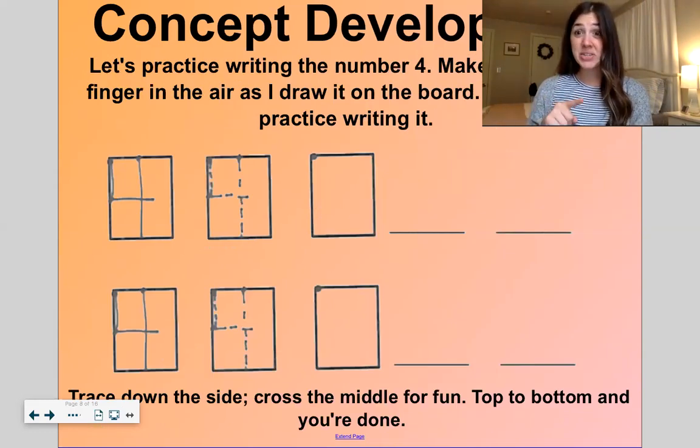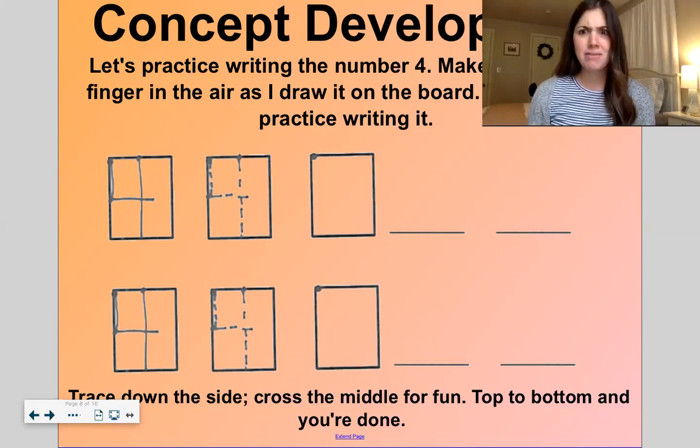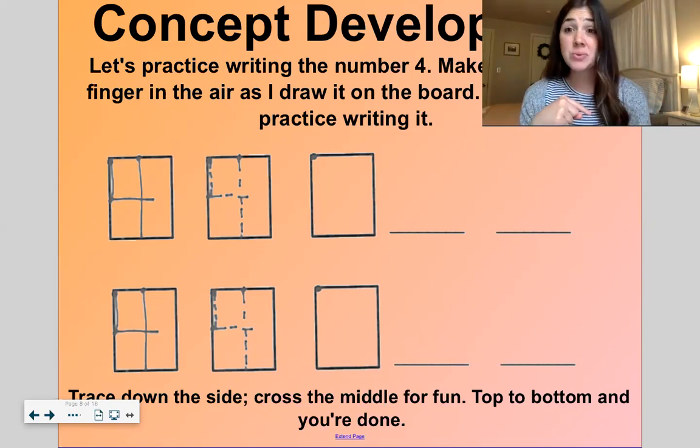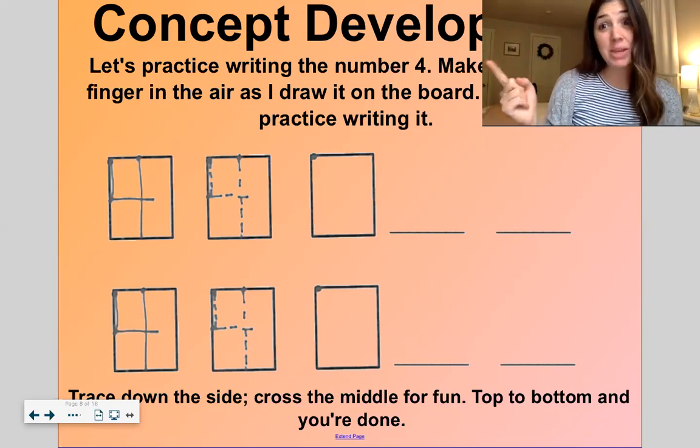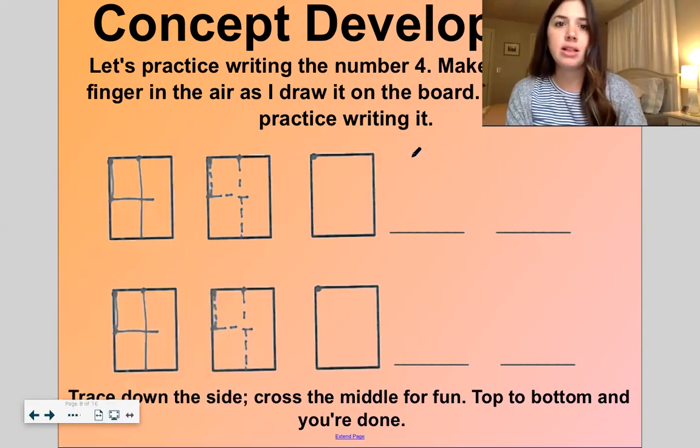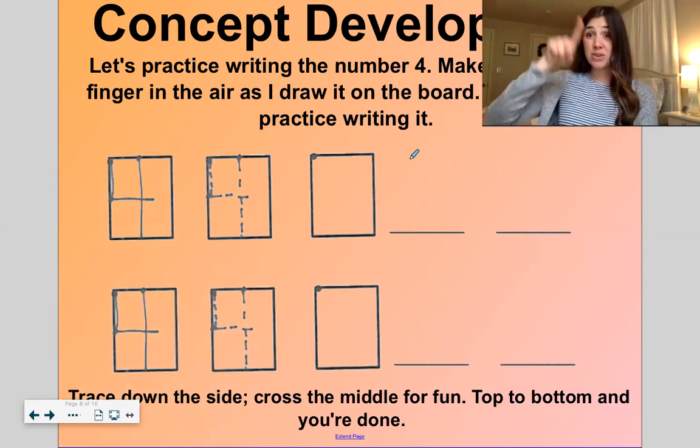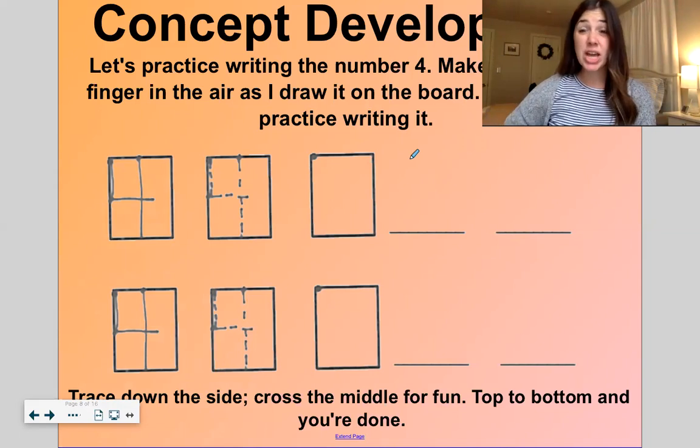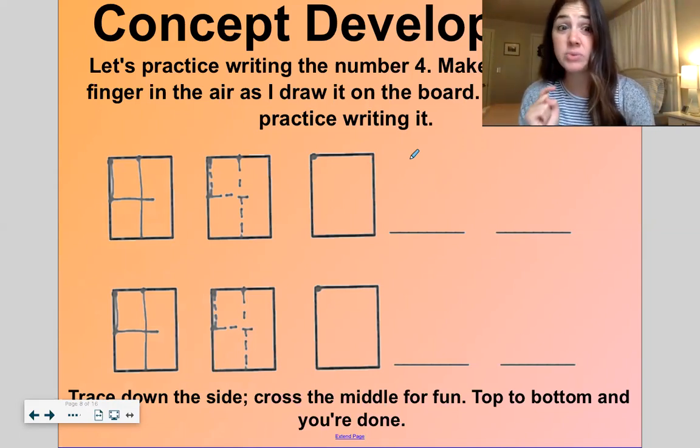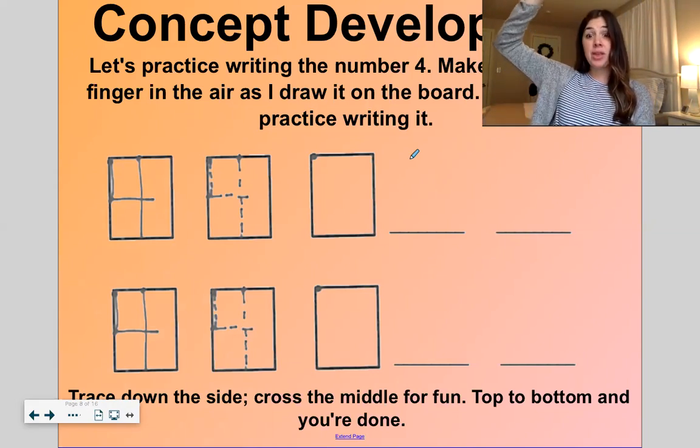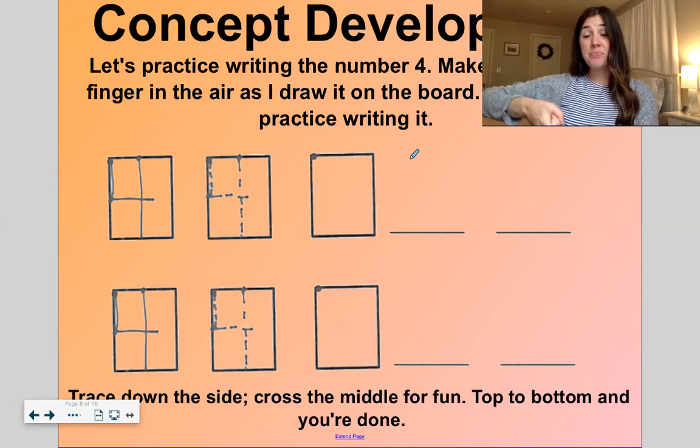Now get out that pencil or whatever you have to write with or on. If you don't have anything, that's okay. We can just use our fingers to write in the air. We're going to practice writing the numbers four and then on the next page we'll do the number five. So let's practice writing the number four. First, we can do it in the air. Trace down the side, cross the middle for fun, top to bottom, and then you're done. So you have to pick up your writing utensil for this one.